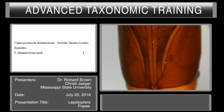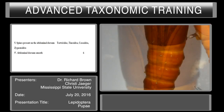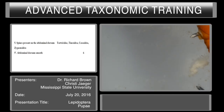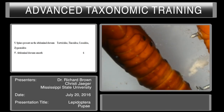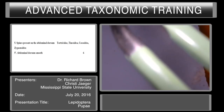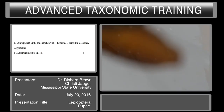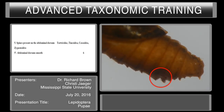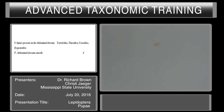Couplet five: spines present on the abdominal dorsum, or abdominal dorsum smooth. We have to flip this specimen over to see the dorsal side, and we can see it is smooth. However, we have a tortricid here to show you what the spines look like — if we zoom in we can see clearly that spines are present. In the tortricid we have two rows of spines on each abdominal segment. So spines are absent and the abdominal dorsum is smooth.